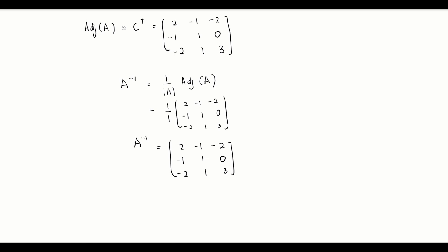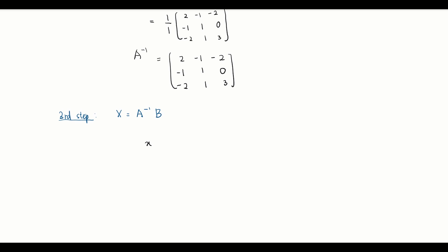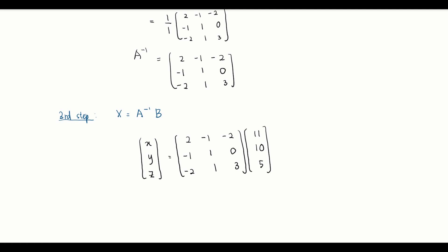The third step is to use the formula X = A⁻¹B. So [x, y, z] equals A⁻¹ times B. Be careful — do not reverse the order and write B times A⁻¹, as that is a common student mistake and is incorrect.